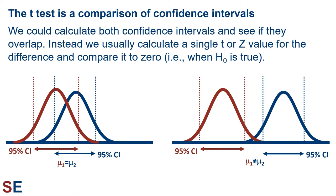We could calculate both confidence intervals and see if they overlap. When they overlap, the population means may well be the same — our null hypothesis — but when they don't overlap, the population means are probably different — our alternative hypothesis. Instead of actually doing this, however, we usually calculate a single t or z value for the difference and compare that to zero, which is what the prediction for the difference would be when the null hypothesis is true. We can do this because the distribution of differences between two normal distributions is itself normal, and we can calculate a confidence interval for these differences based on our sample data.